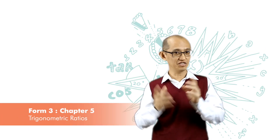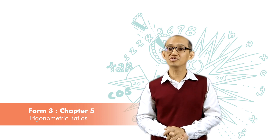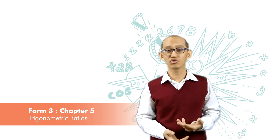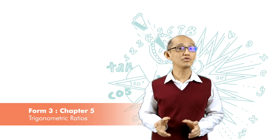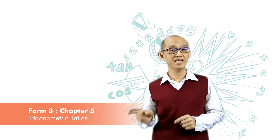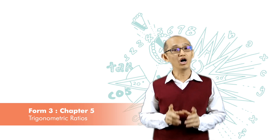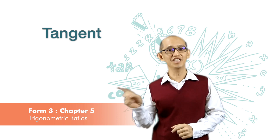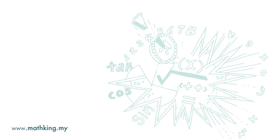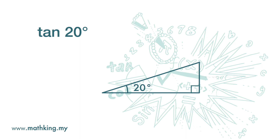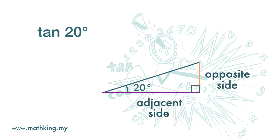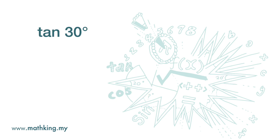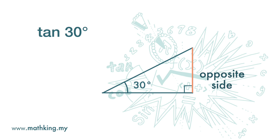We were talking about 60 degrees, but there are other angles — 20 degrees, 30 degrees, 40 degrees, 50 degrees, and so on. They all have different values for the ratio of the opposite side to the adjacent side. This ratio of opposite side to adjacent side, we give it a name: tangent. When you see tangent 20 degrees, it refers to the ratio of the opposite side to the adjacent side of a right angle triangle with a 20 degree angle. When you see tangent 30 degrees, it refers to the ratio of the opposite side to the adjacent side of a right angle triangle with a 30 degree angle.